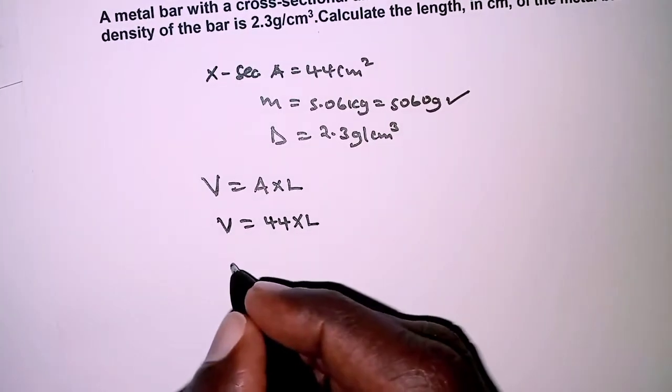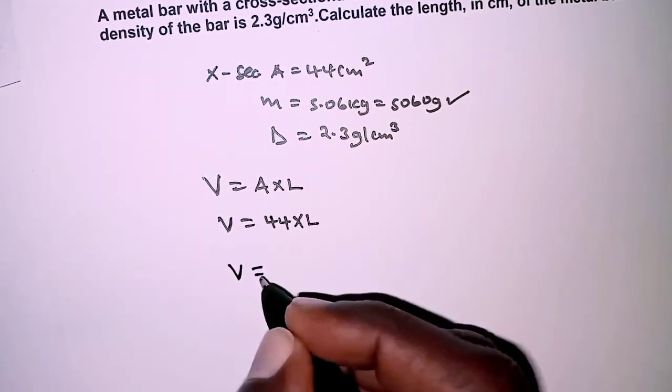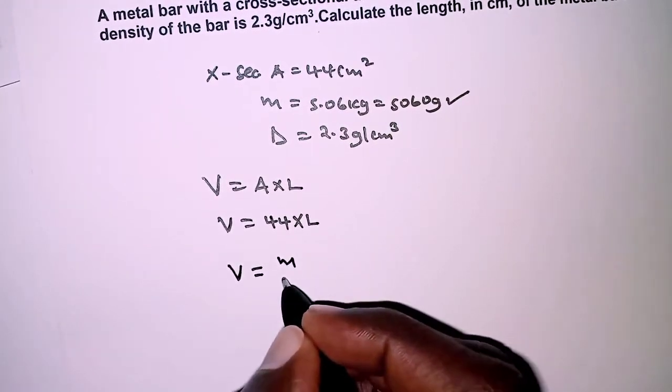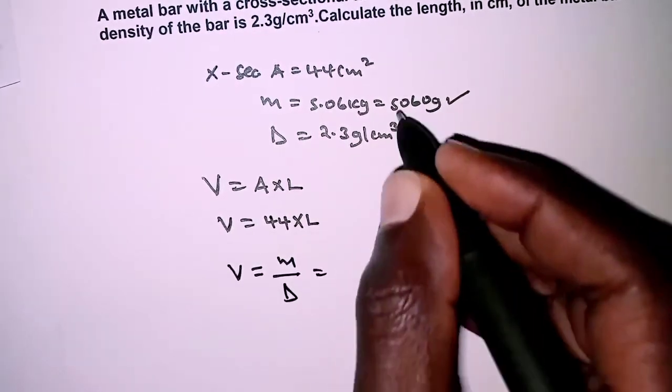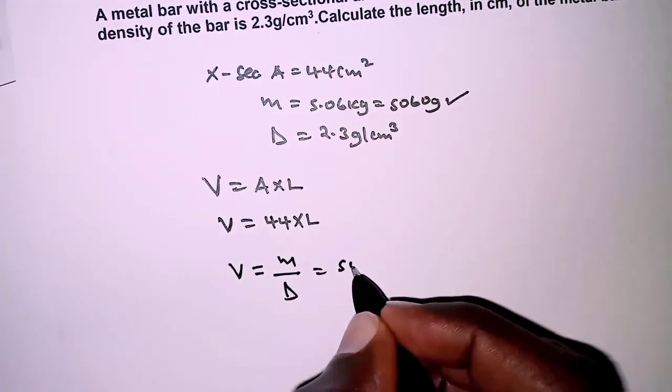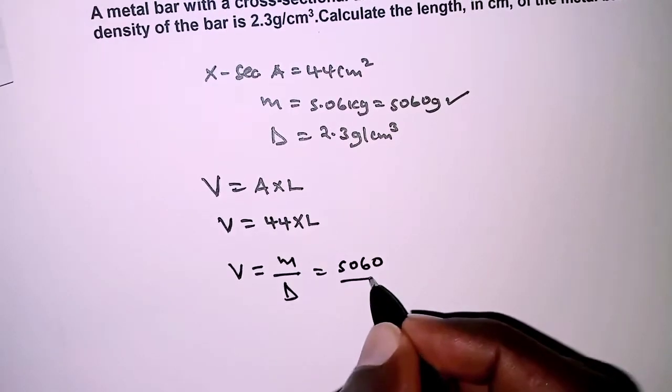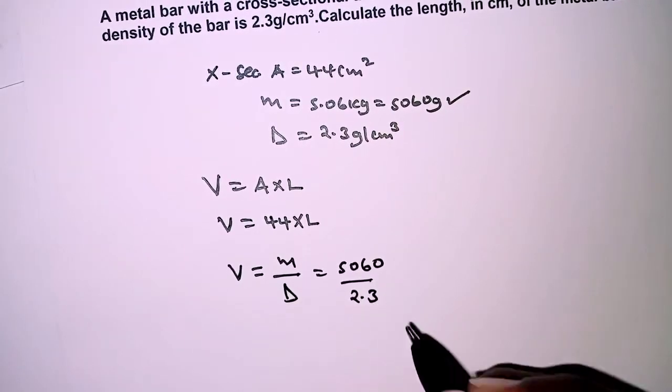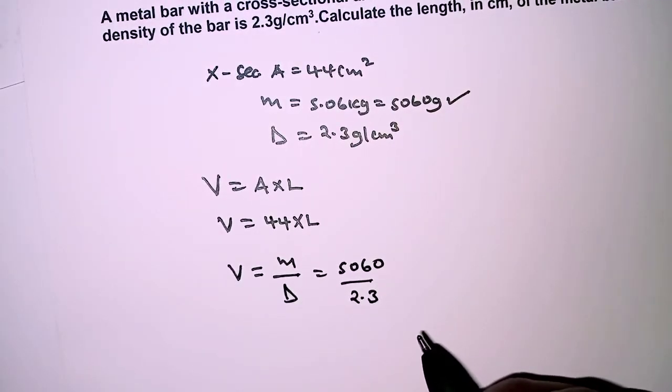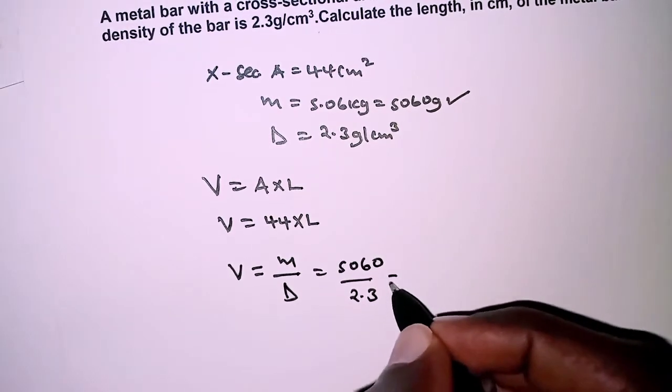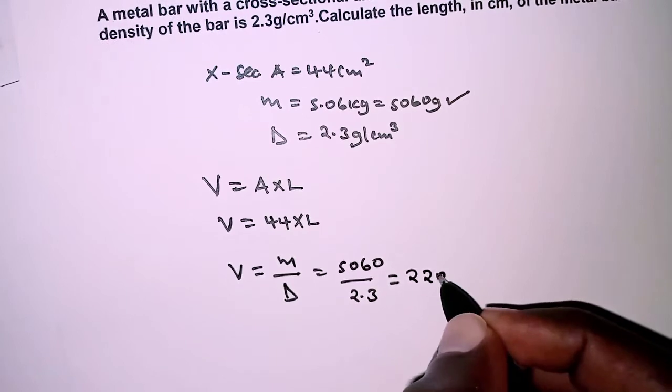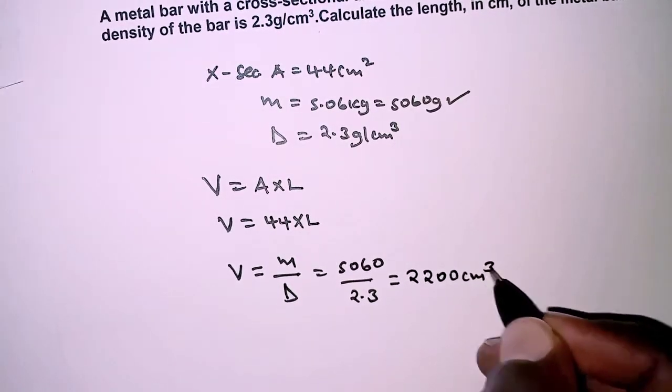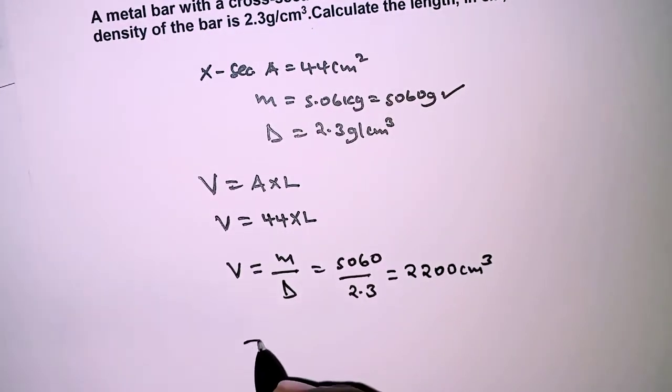Volume we simply obtain as mass over density. The mass we already have as 5060 grams over the density which is 2.3 grams per cubic centimeter. Dividing this, we simply get 2200 cubic centimeters.